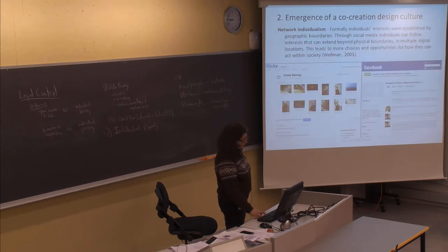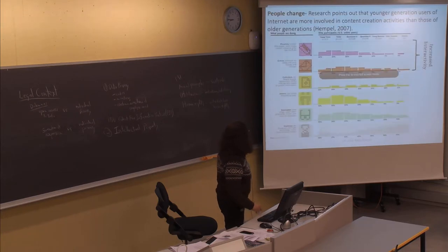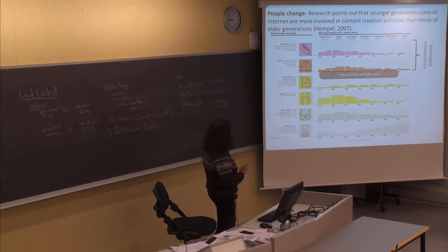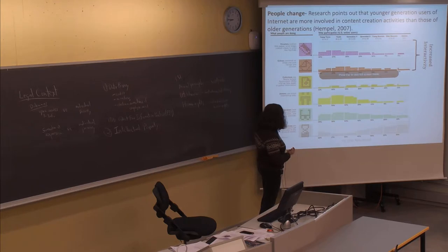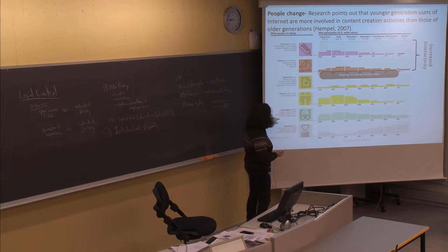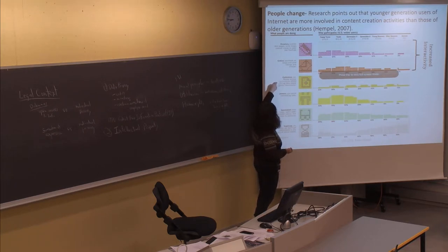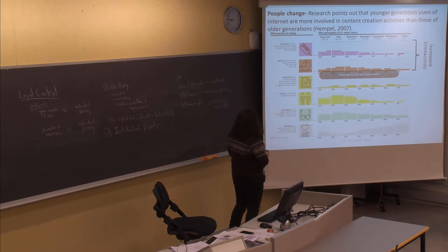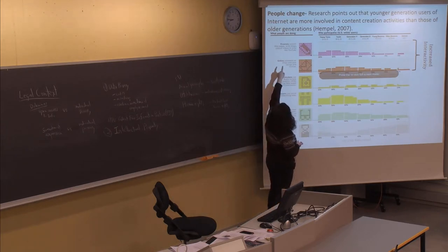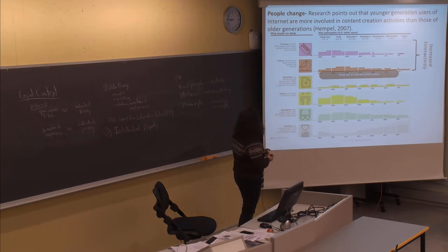The second factor is that people are changing. Research points out that the younger generation of internet users are more involved in content creation than those of the older generation. There are different types of users: inactives who are online but don't participate in social media; spectators who read blogs, watch videos, and listen to podcasts; joiners who use social networking sites; collectors who gather news via RSS; critics who comment on blogs; and creators who publish web pages, create blogs, and upload videos.